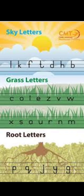First, let me tell you what Sky Letters are. Students, the letters which come in the top three lines are Sky Letters, and we have seven Sky Letters: L, K, F, T, D, H, and B.